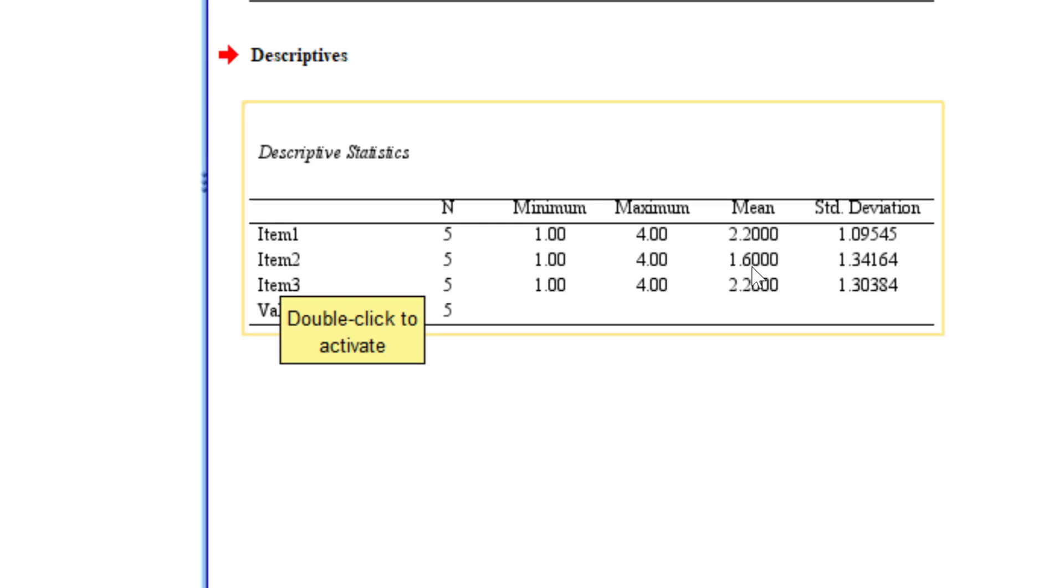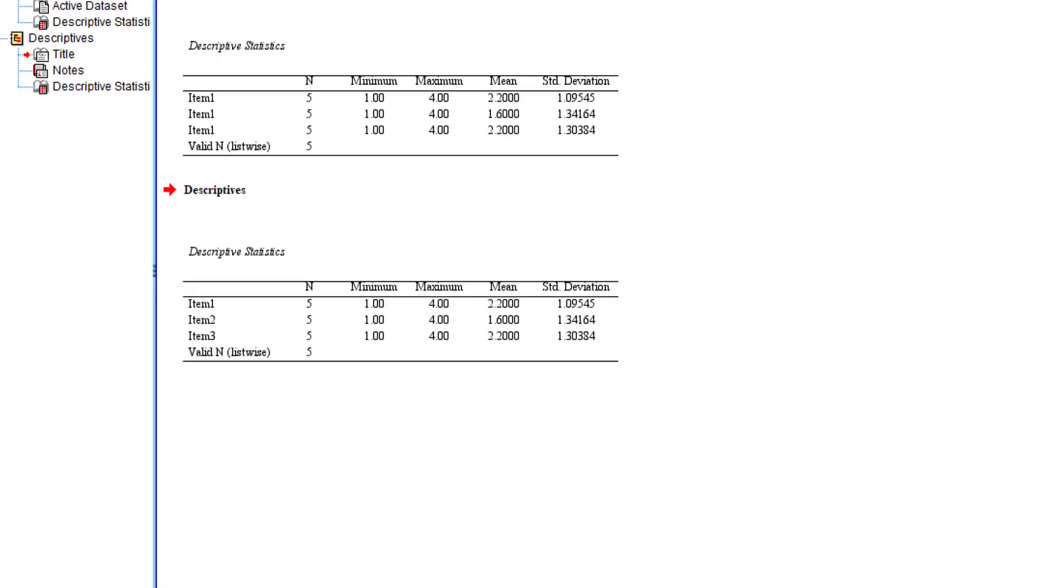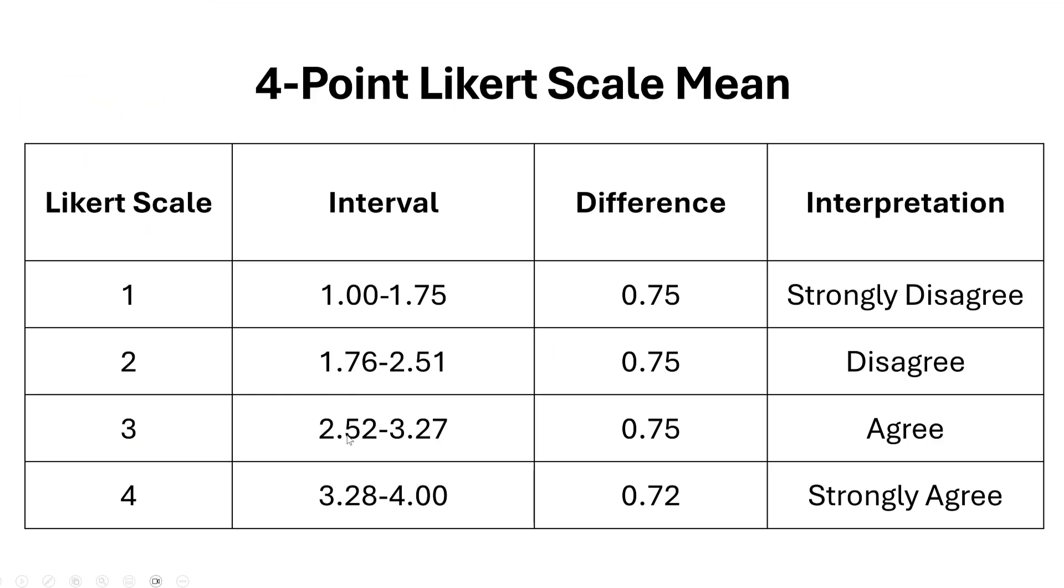Most respondents disagreed with item two because it has the lowest mean score, 1.60. If we look for 1.60 in the table, it falls within the 1.00 to 1.75 range, which means strongly disagree. This is the interpretation that we can give it.